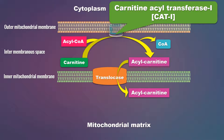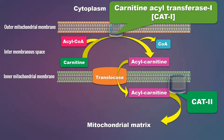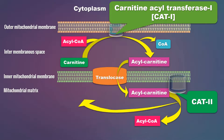Now we have acyl-carnitine in the mitochondrial matrix, and it must be converted back to acyl-CoA. For this we have an enzyme loosely attached to the inner mitochondrial membrane called carnitine acyl-transferase-2, or CAT-2. This enzyme catalyzes the conversion of acyl-carnitine to acyl-CoA and free carnitine.